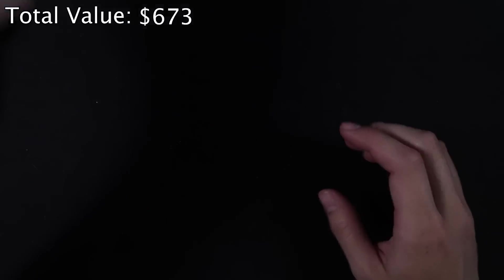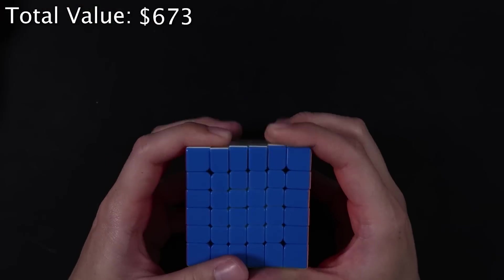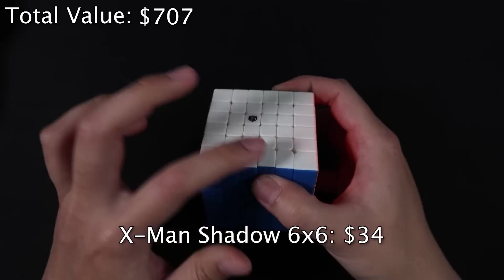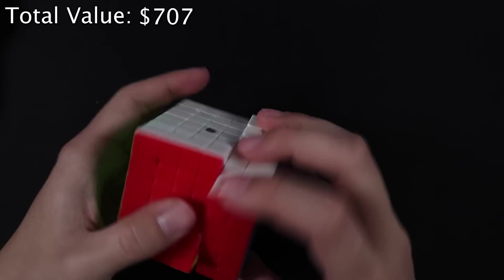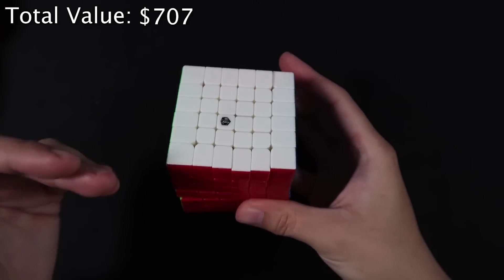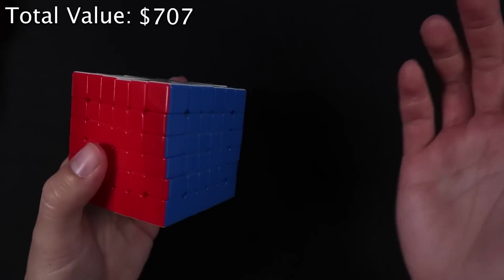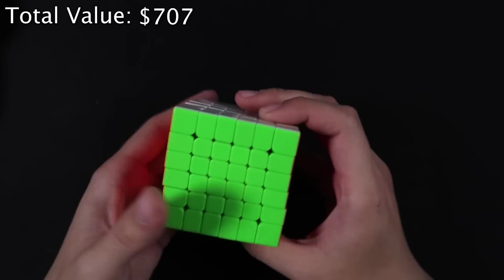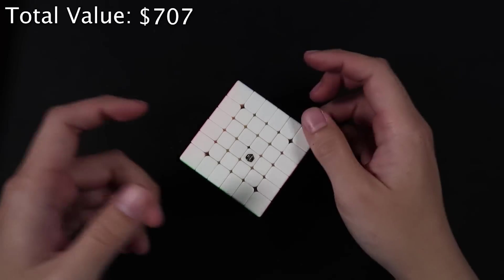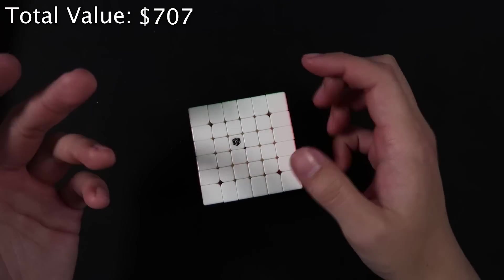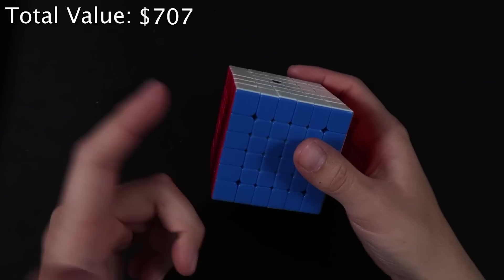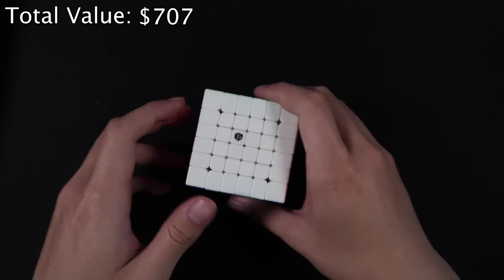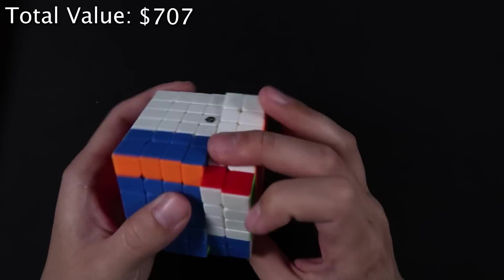We'll start with this guy. This is the X-Man Shadow 6x6. This is the version 1, and it's non-magnetic. For a non-magnetic 6x6, it's pretty darn good, but of course, by today's standards, it's a little bit outdated. So this puzzle is actually not worth it, because I think you can just buy it new from the cubicle for $33.99. So I basically paid $35 for this. So, bad deal on my part. But, whatever.